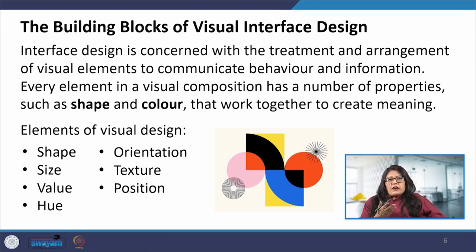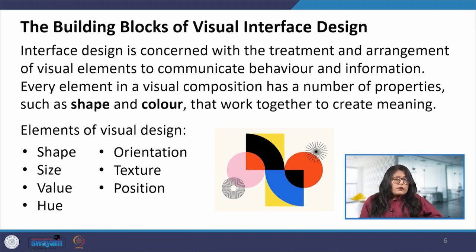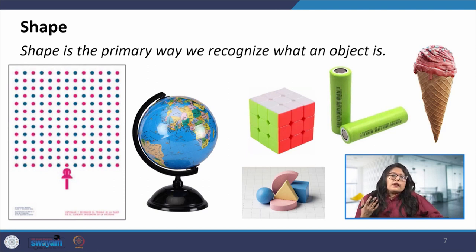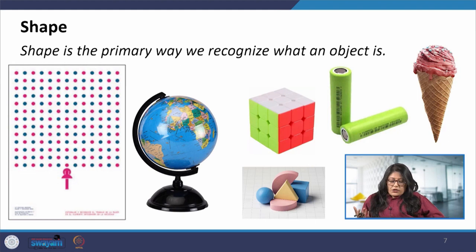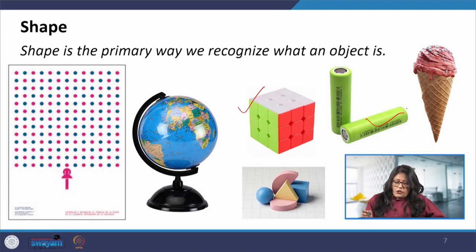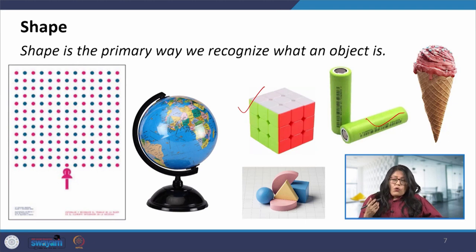The building blocks include shape, size, value, hue, orientation, texture, and position — we will be taking them up in the next few slides. The fundamental elements of design like line, point, and shape form the backbone of the design language when it comes to interface design, interaction design, or many other communication solutions. When we use shape in conjunction with colour, the shape may reveal meaning and makes the composition more appealing to the audience.